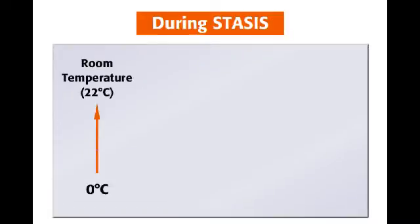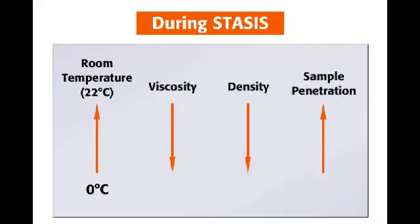During the stasis phase, the chamber temperature will slowly rise up to room temperature, from zero degrees to around 22 degrees Celsius. With this change, the fluid viscosity, or the amount of fluid resistance, will go down. At the same time, the density of the fluid will go down also. These changes in fluid dynamics will allow for more fluid penetration in and out of the sample.